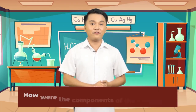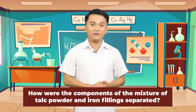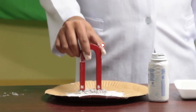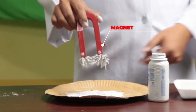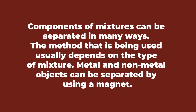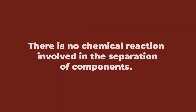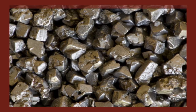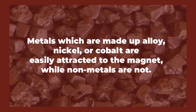How were the components of the mixture of talc powder and iron fillings separated? That's right, by using a magnet. Components of mixtures can be separated in many ways. The method used usually depends on the type of mixture. Metal and non-metal objects can be separated by using a magnet. There is no chemical reaction involved in the separation of components. Metals which are made up of alloy, nickel, or cobalt are easily attracted to the magnet, while non-metals are not.